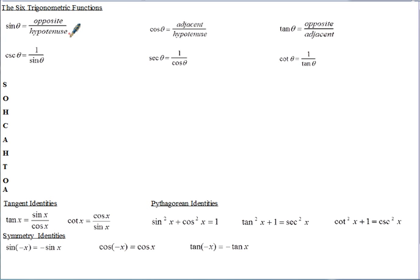The first way you want to think about these is the ratio of two sides of a right triangle. Sine is the ratio of the opposite over the hypotenuse, cosine is the adjacent over the hypotenuse, and tangent is the opposite over the adjacent.